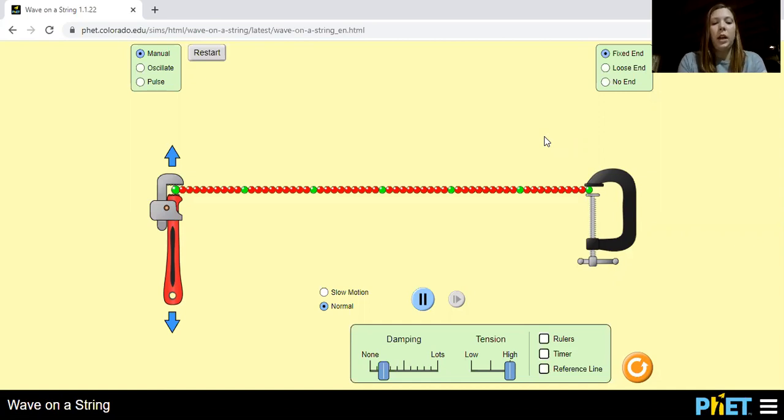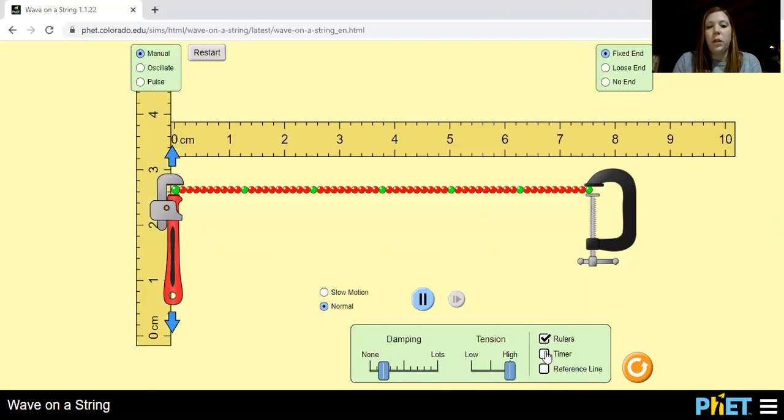So we're on the wave on a string on PhET, and what we want to be able to do is to create a wave disturbance so it's easier to measure its speed. We can use the ruler and the timer to help us measure. We need to measure a specified distance for each trial. I'm going to go from zero to three centimeters.